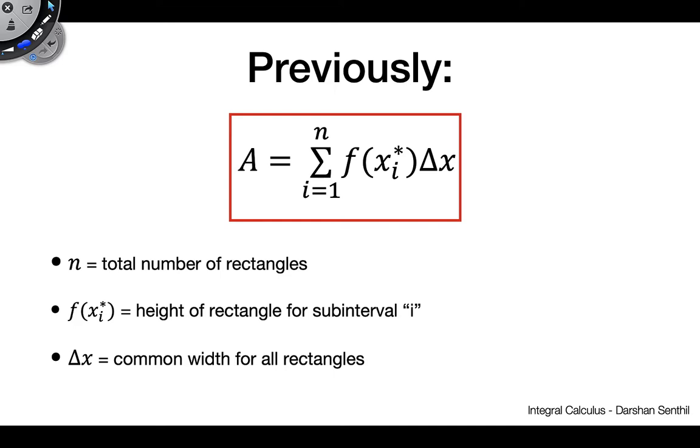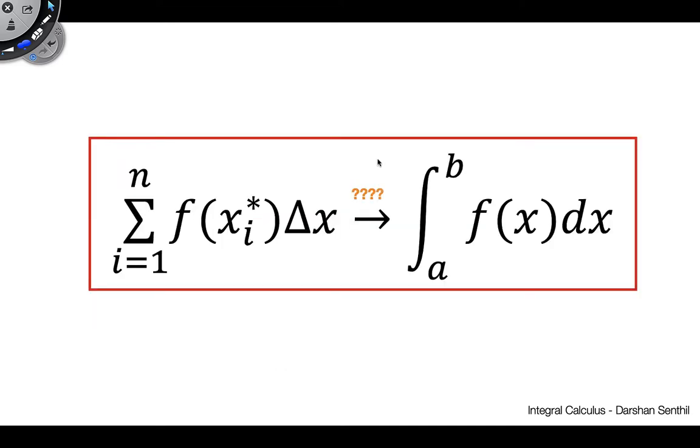So the question we're going to tackle in this video is how we can take this Riemann sum, this approximation that is the Riemann sum, and turn it into this perfect representation for area under the curve, that is the definite integral. So that's going to be our topic of focus for today's video.